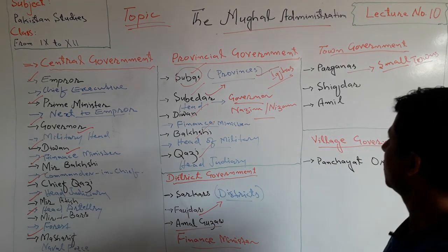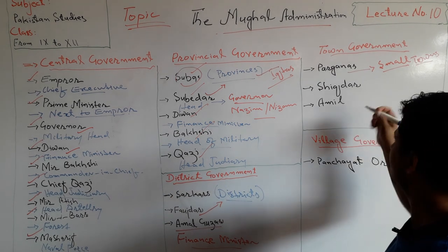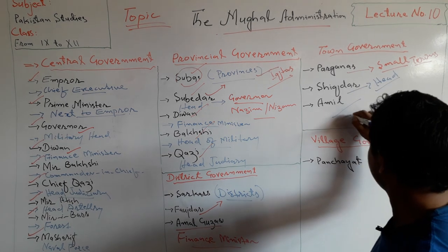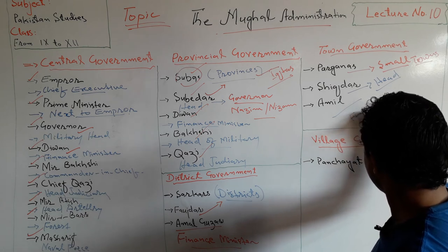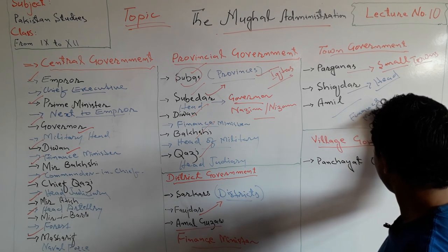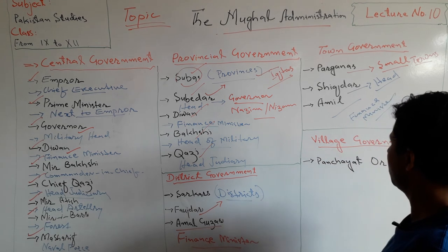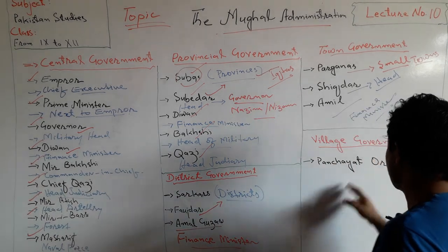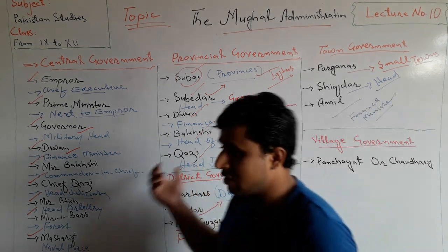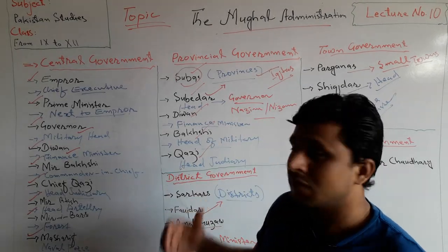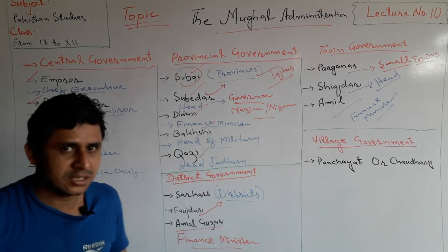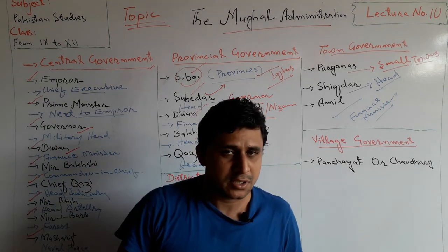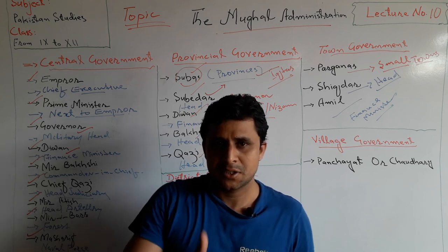The Shikdar was the head of town government and the Amal was the Finance Minister at the town level. Villages were under the government of Panchayat and Choudhri. In this way the Mughal administration was structured. In the next lecture we will discuss the military system and land revenue system of the Mughal Empire. Thank you very much, take care, Allah Hafiz.